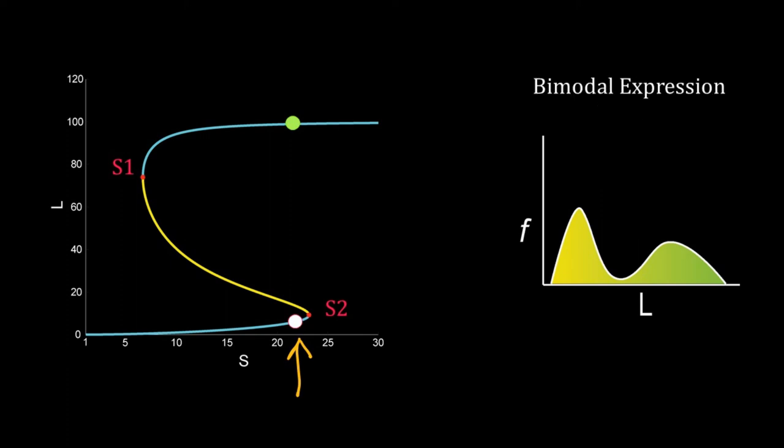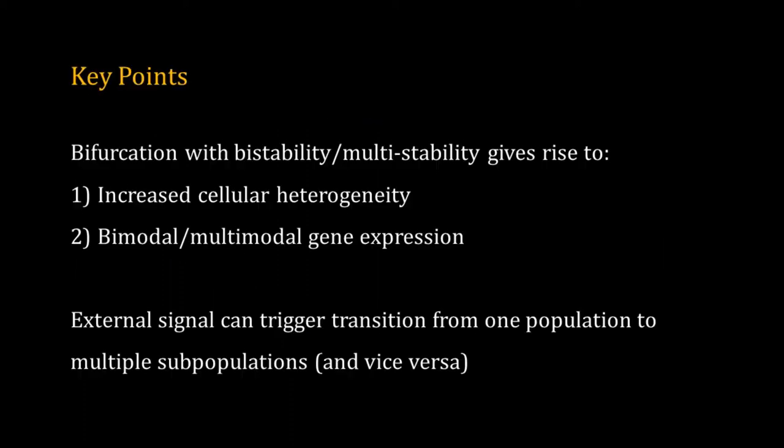Therefore this type of gene expression with two subpopulations is called a bimodal expression. Bimodality in gene expression due to bistability has been shown in many experimental systems. In the last video we have shown that a bistable system can have hysteresis. Hysteresis has been experimentally observed in transcriptional circuits with bistability. Some transcriptional networks can be multistable, meaning more than two stable steady states.